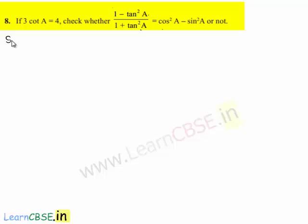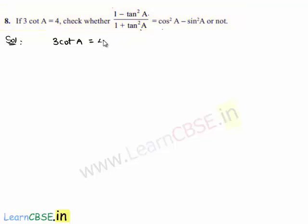Moving on to the solution, it is given that 3 cot a is equal to 4, which implies cot a will be equal to 4 by 3.